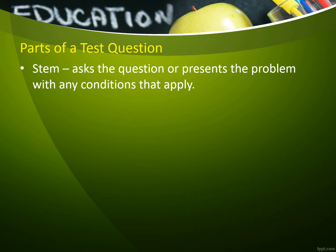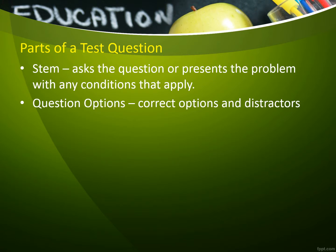The parts of a test question include the stem, which asks a question or presents a problem with any conditions that apply. It may be in the form of a complete or incomplete sentence and may be either positive or negative in nature. A positive stem is used to determine if the test taker understands the information and is able to take appropriate actions. A negative stem asks about something that is false — with negative stems, look for words such as 'not,' 'except,' or 'contraindicated.' A stem may also be used to identify a priority. Make sure you understand what the object of the question is. We will discuss more about how to understand test questions in the NCLEX review lessons. We also have question options, correct options, and distractors. Distractors are created to distract the test taker from the correct answer and are written to allow the student to use critical thinking.